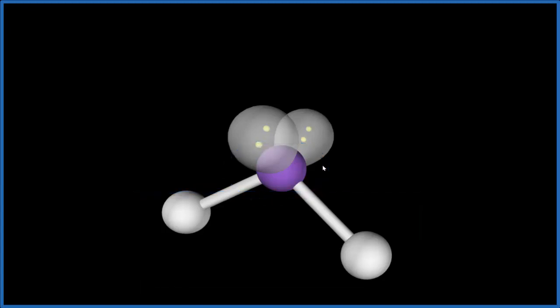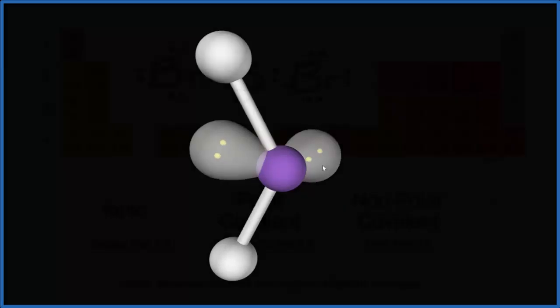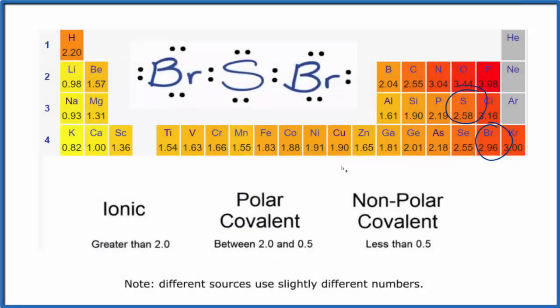So even though it's nonpolar covalent, it's not too far from being a polar compound. Let's go back to our Lewis structure. In answer to our question, SBr2 is going to be nonpolar covalent because the difference in electronegativity is less than 0.5.